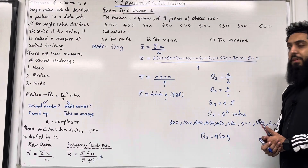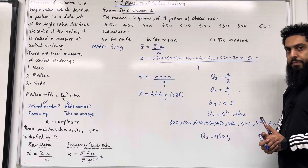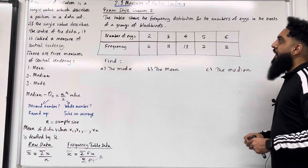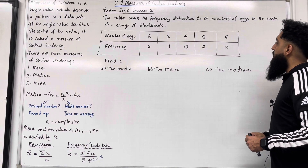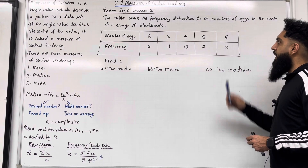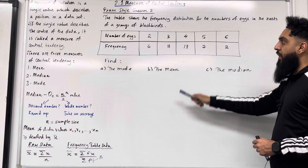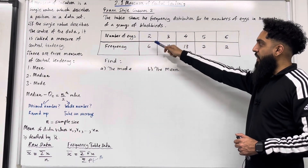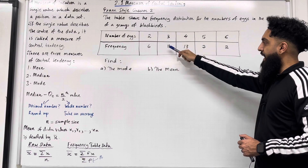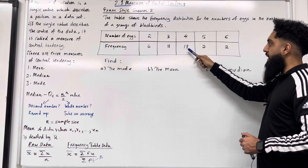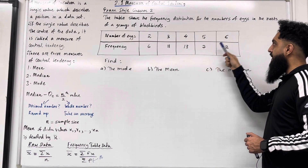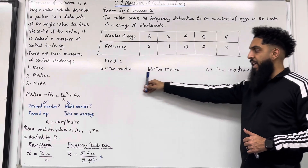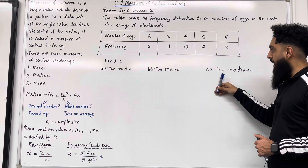That completes exam style question 1. Here is exam style question 2. The table shows the frequency distribution for the number of eggs in the nest of a group of blackbirds. In the frequency table: 2 eggs has frequency 6, 3 eggs has frequency 11, 4 eggs has frequency 13, 5 eggs has frequency 7, and 6 eggs has frequency 2. Find part A the mode, part B the mean, and part C the median.